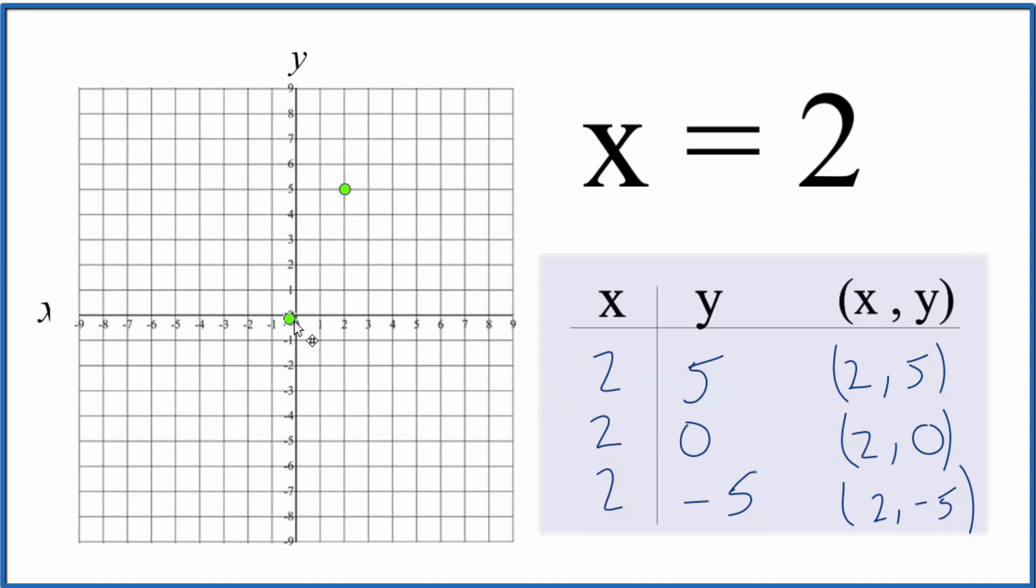X is 2, y is 0 right there. And then x is 2, y is negative 5. Go down to negative 5.